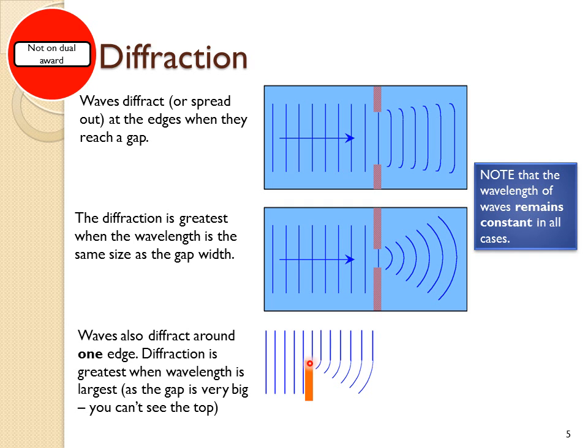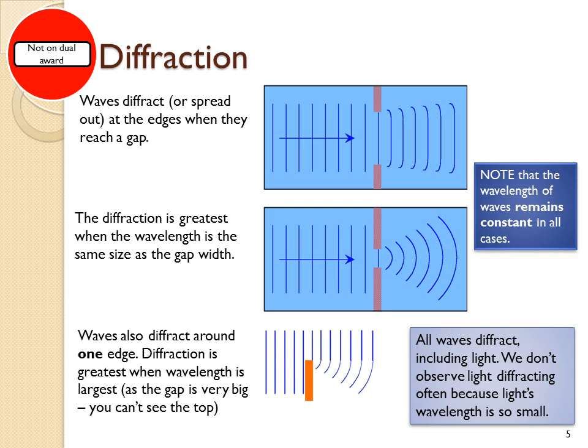Diffraction happens when there's only one edge. In this case, the gap is considered very large, and so the diffraction is greatest when the wavelength is very large, a very long wave will diffract the most. All waves diffract, including light, but we don't observe light diffracting very much because its wavelength is so small. You'd need a very small gap to see its diffraction.